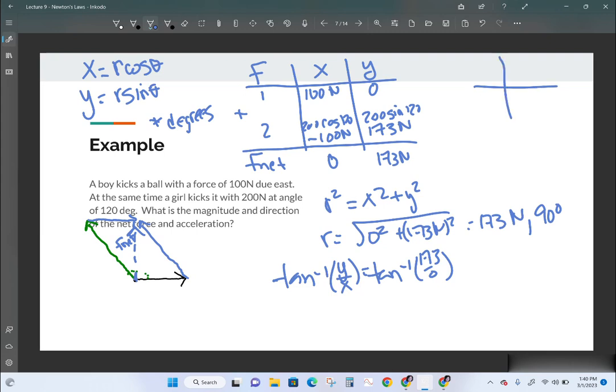So it has a direction of 90 degrees. Remember that for our polar coordinates, this is 0 degrees, this is 90, 180, 270. And we always measure from the positive x-axis.